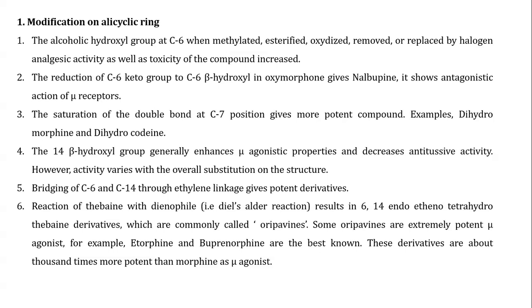The 14-beta-hydroxyl group generally enhances mu agonist property and decreases antitussive activity. However, activity varies with the overall substitution on the structure. Bridging of the 6th carbon and 14th carbon through an ethylene linkage gives a potent derivative. Reaction of thebaine with a dienophile results in 6,14-endoethano-tetrahydrothebaine derivatives, commonly called oripavines. Some oripavines are extremely potent mu agonists — for example, etorphine and buprenorphine are the best-known examples.